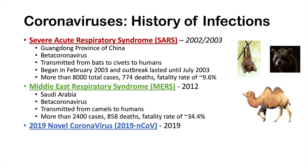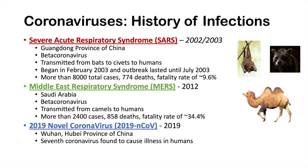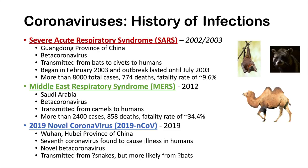The newest outbreak is the 2019 novel coronavirus, designated 2019-nCoV. It occurred in December 2019, starting in Wuhan, a city in Hubei province of China. It is the seventh coronavirus found to cause illness in humans and, like SARS and MERS, is a beta coronavirus with many similarities to SARS. The exact transmission route is still being investigated — early evidence suggested snakes, but current evidence more strongly suggests bats. An animal market in Wuhan appears to have been the epicenter of the outbreak.